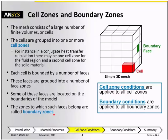So to summarize, in order to solve the problem, cell zone conditions need to be applied to all of the cell zones, and boundary conditions need to be applied to all of the boundary zones.